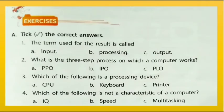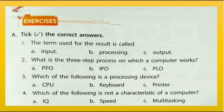Here we have completed our chapter. Now let's do the textbook exercise. The term used for the result is called output. The three-step process on which a computer works is IPO — input, processing, output. The processing device among the options is CPU. IQ is not a characteristic of a computer.